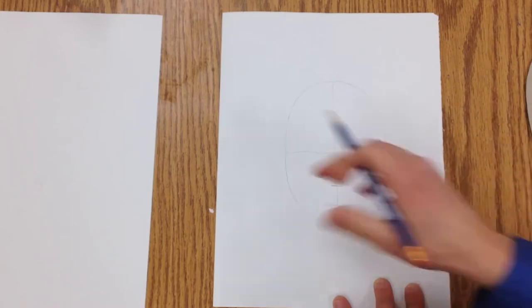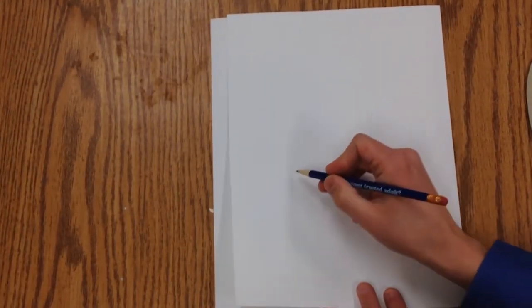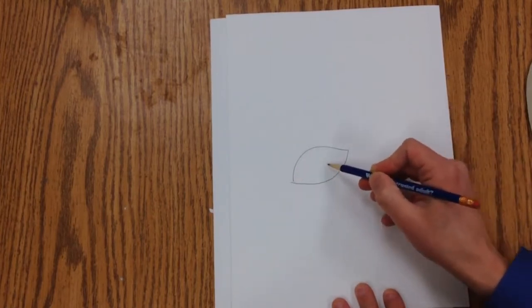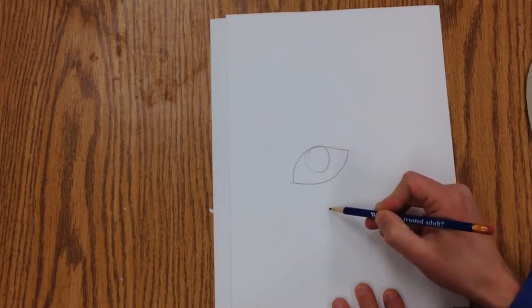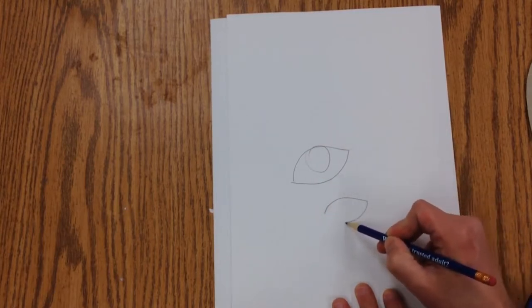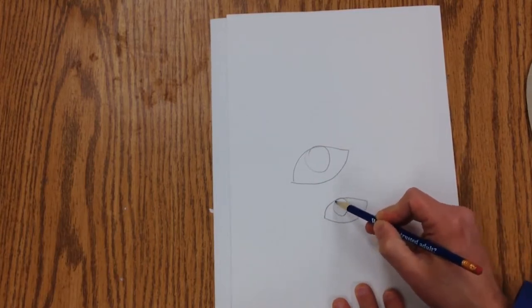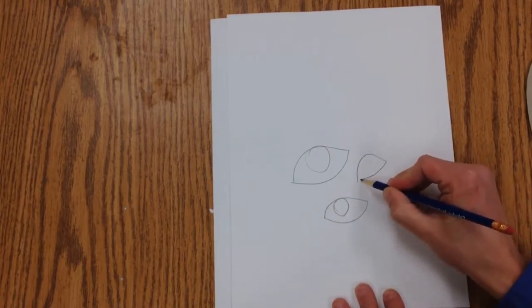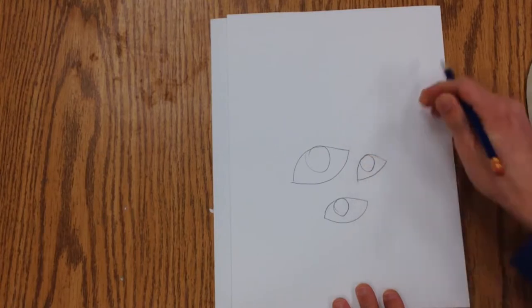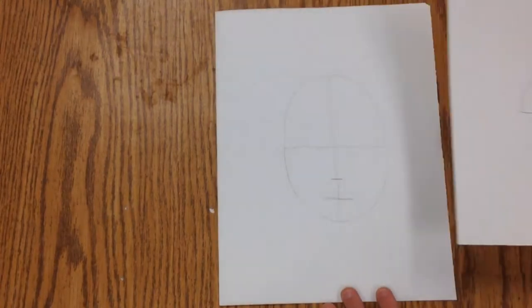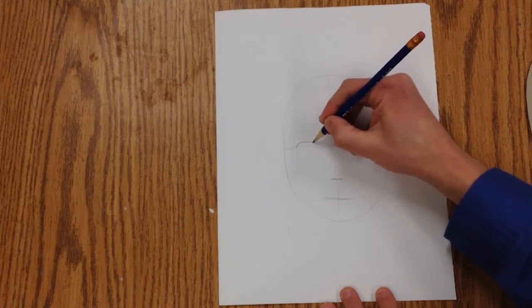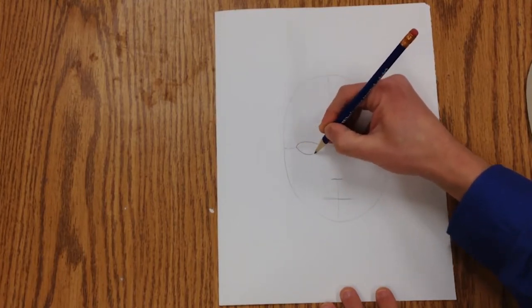Now eyes are all different. Some eyes are like this, kind of arch and then swoop down at the bottom. Some eyes are higher on the top than others on one side. Some of them are really curved at the top, flat on the bottom. You need to look in the mirror and see what your eyes actually look like. Generally, they're going to be like footballs.